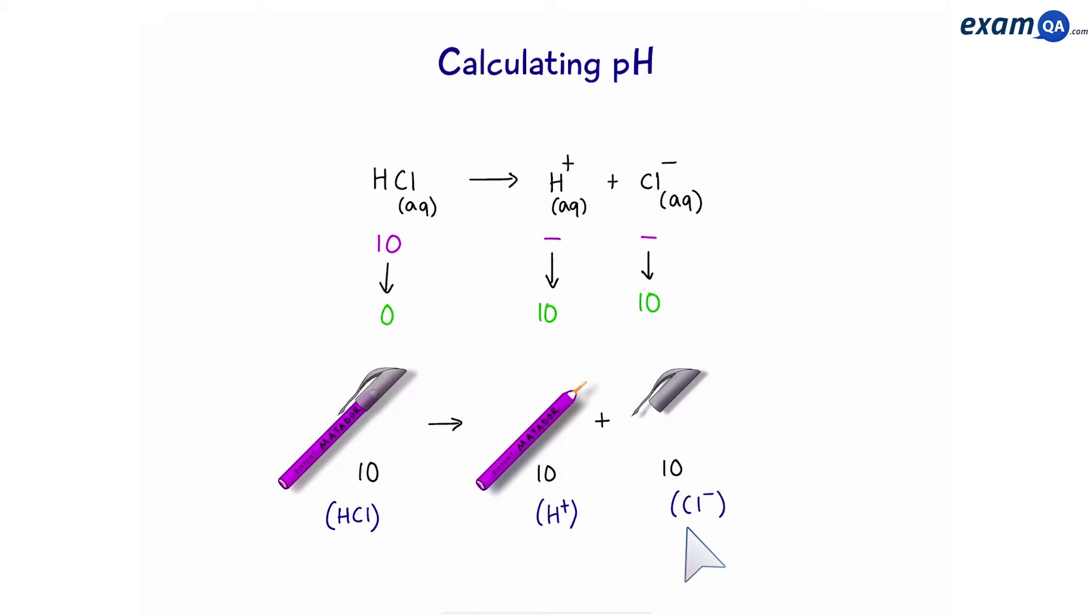Now something important to notice here is that the amount of hydrogen produced was equal to the amount of hydrochloric acid that we had initially.